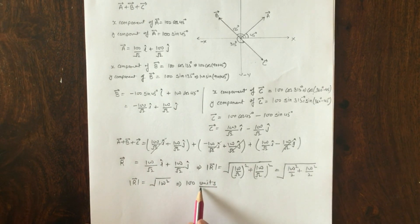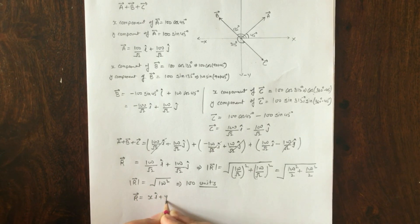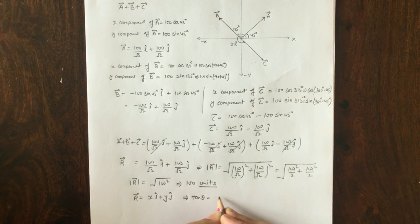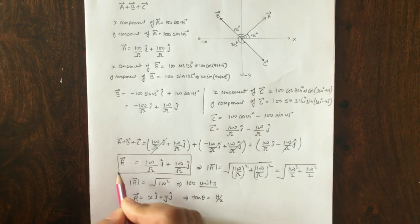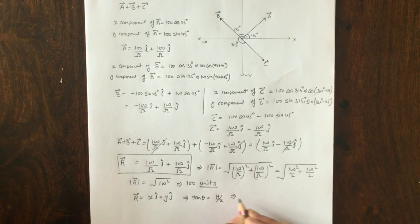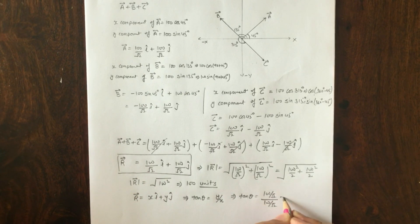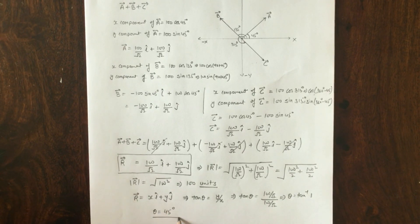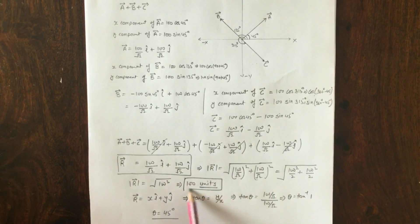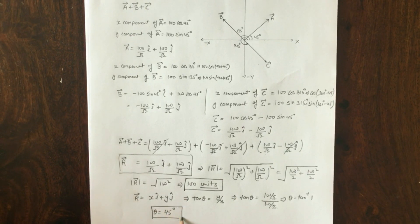To find the angle of the resultant with the x-axis, we use tan θ = y-component / x-component. For R = (100/√2) i + (100/√2) j, tan θ = (100/√2) / (100/√2) = 1, so θ = tan⁻¹(1) = 45°. Therefore, the resultant is 100 units in magnitude making an angle of 45° with the x-axis.